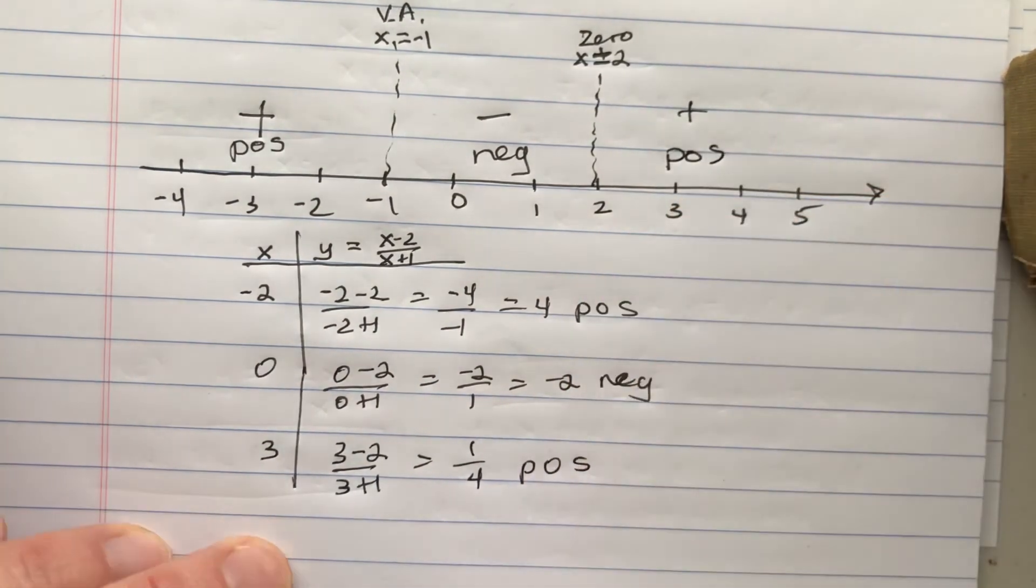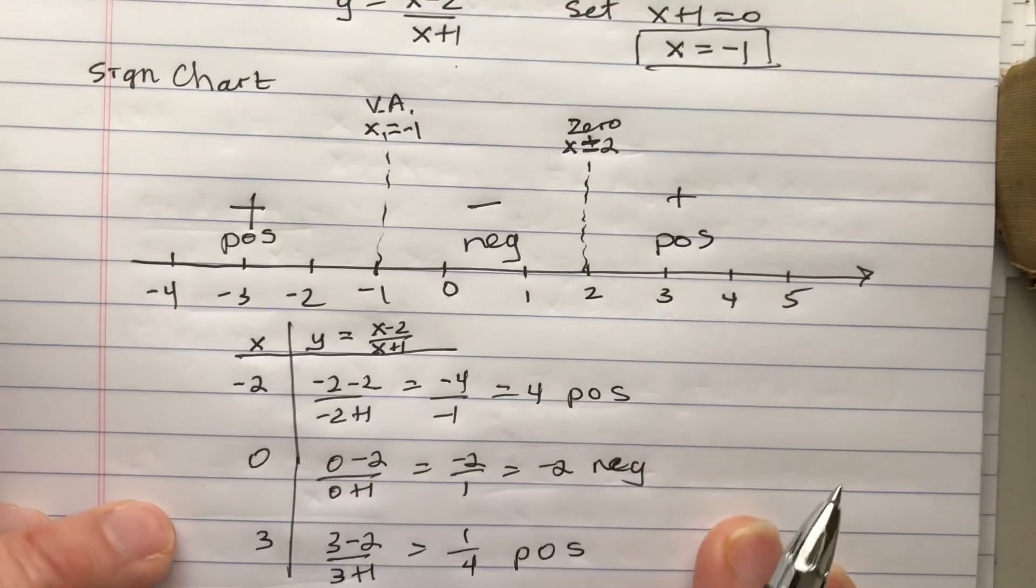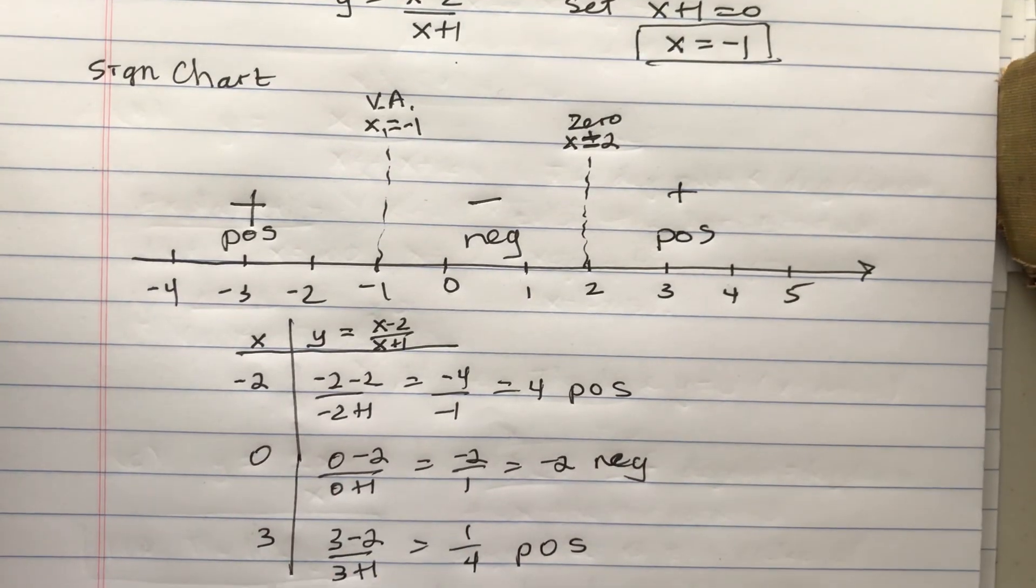What's the point of the sign chart? The sign chart tells us when the function is positive and negative. And then we can also use this to sketch the graph, and we'll do that for another problem.